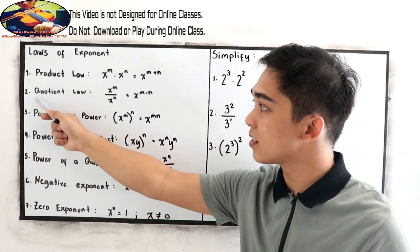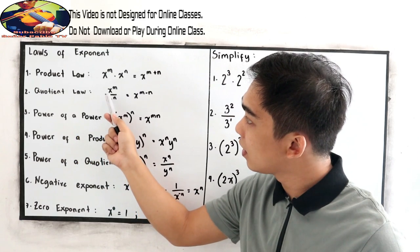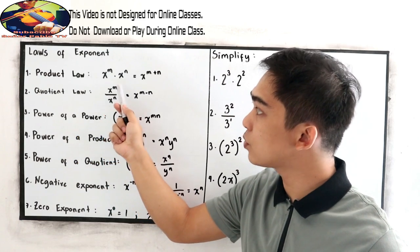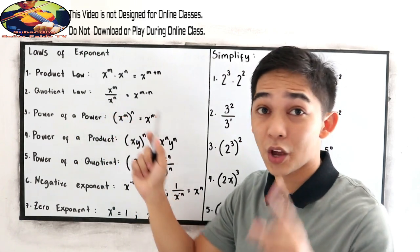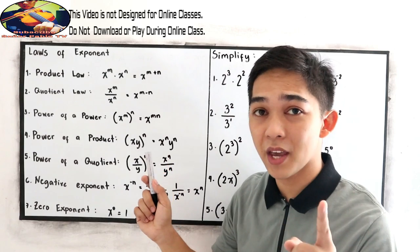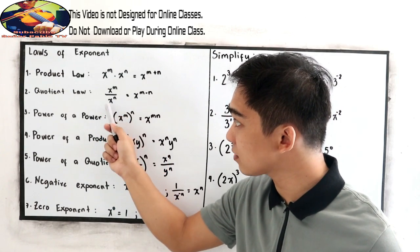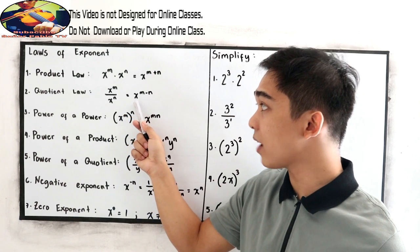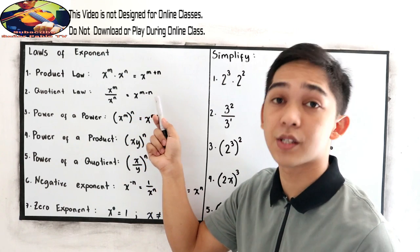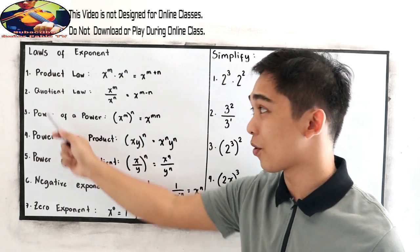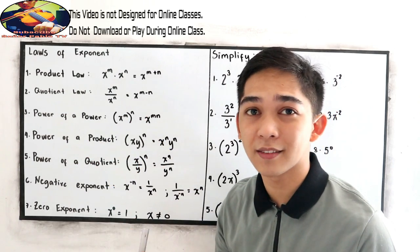The second is the quotient law. x raised to m over x raised to n. If we have the same base, in this case x, the result is x raised to m minus n. In the quotient law, we're just going to subtract the exponents.